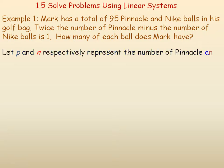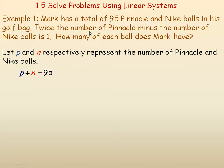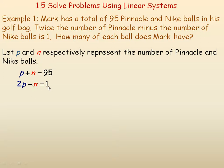Just like in previous examples, the first thing you should do is identify your variables and decide what you're going to use to represent each one. I'm going to use P to represent the number of Pinnacle balls and N to represent the number of Nike balls. The first sentence tells us that P plus N equals 95. The second sentence says twice the number of Pinnacle, 2P, minus the number of Nike balls, equals 1. So there are our two equations.